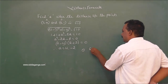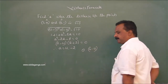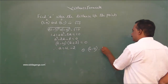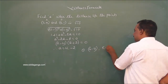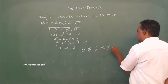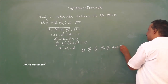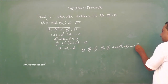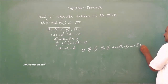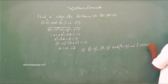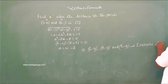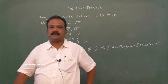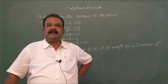Homework: Show that (6, 4), (5, −2) and (7, −2) are the vertices of an isosceles triangle.